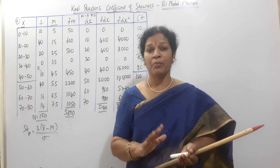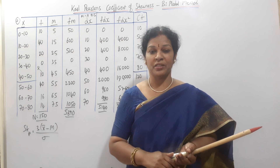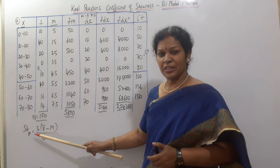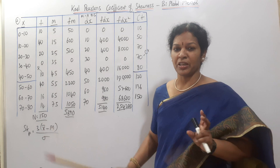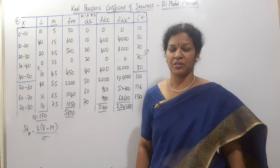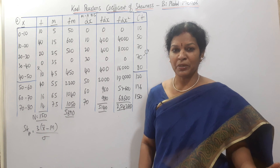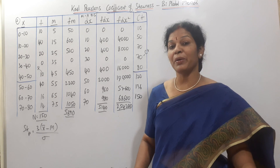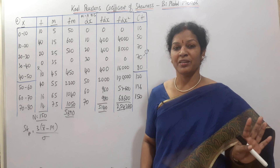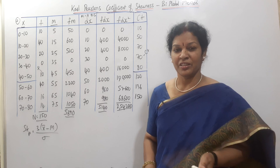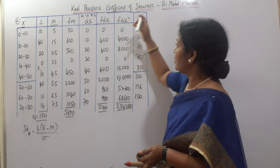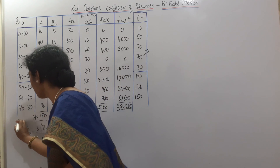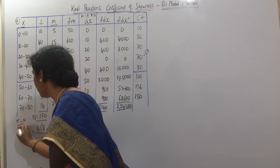Another formula is used in the bimodal method. That formula is 3 into x-bar minus median divided by standard deviation. The easy standard formula is x-bar minus z divided by rho. That is Carl Pearson's formula.